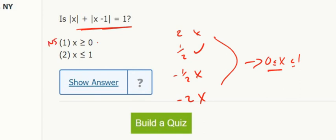Number 2 tells me it's less than or equal to 1. But I don't know whether it could be one of these negative numbers, so that's not sufficient on its own. But if I put them together, that means x is between 0 and 1. That's what I want to see.